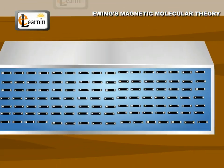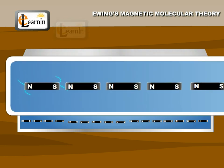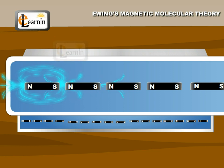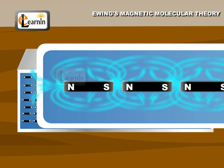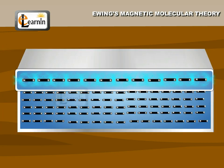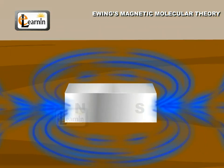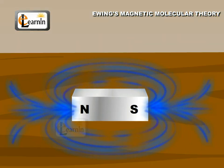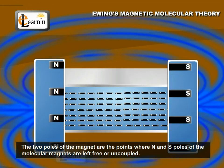This state of magnetization is shown. Inside the magnetized iron bar, the N pole of each elementary magnet is coupled to the S pole of the next magnet, and so on. However, there are free N poles at one end and free S poles at the other end. These free poles make the iron bar as a whole magnet with two N-S poles. These two poles are the points where N and S poles of the molecular magnets are left free or uncoupled.